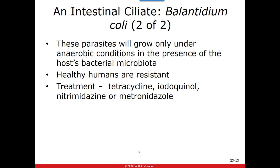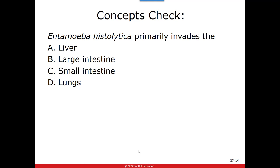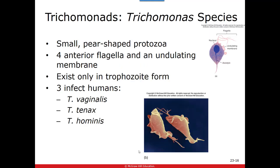Quick concept check: Entamoeba histolytica primarily invades the small intestine, and many individuals are carriers of this particular organism. Now, our flagellated organisms — we'll start with the Trichomonas species. Their shape is described as pear-like, they're smaller, and they have flagella. Depending on the organism, some have multiple flagella arranged on various sides. They exist only in the trophozoite form — there's no cyst form. There are three Trichomonas organisms that infect humans: T. vaginalis, T. tenax, and T. hominis.